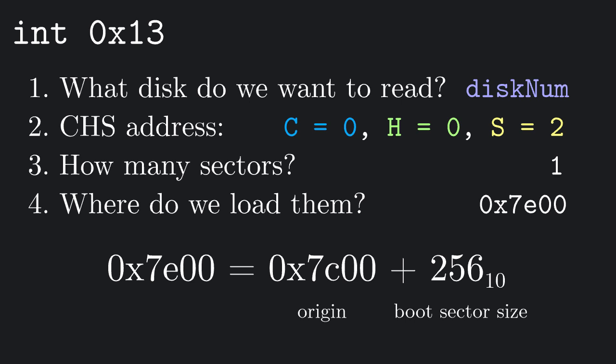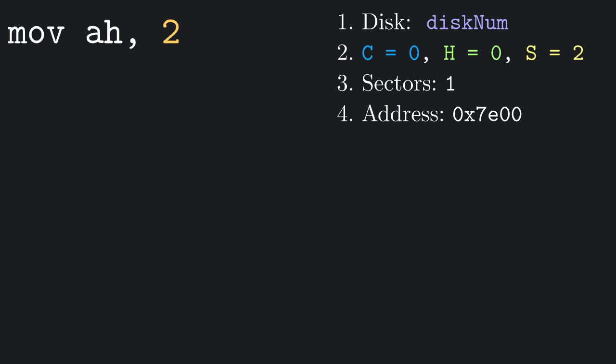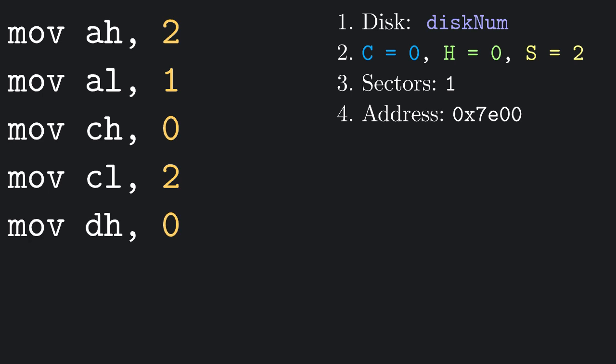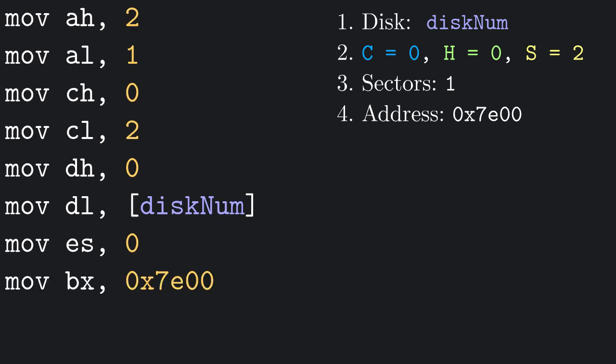Once we have all this information, we can use interrupt 0x13 using the following register values. AH must be 2. AL is the number of sectors we want to read, which is 1. CH is the cylinder number, which is 0. CL is the sector number, 2. DH is the head number, 0. DL is the drive number that we saved in a variable. ES, offset by BX, is a pointer to where we want to load the sectors. As I anticipated in the previous video, ES is the extra segment, and it's simply used to reach a higher number of memory locations. In this case, as 0x7E00 can be represented with 16 bits, we can just set ES to 0 and BX to 0x7E00.